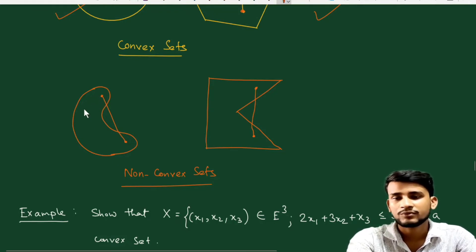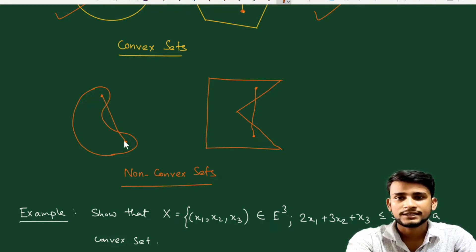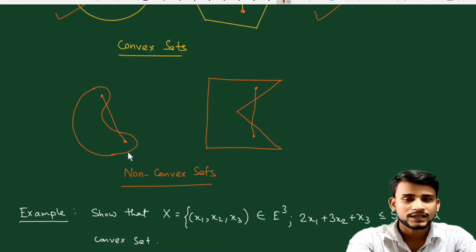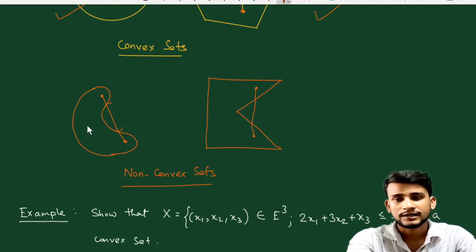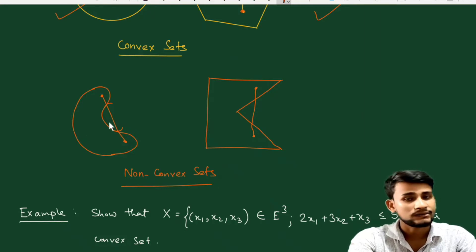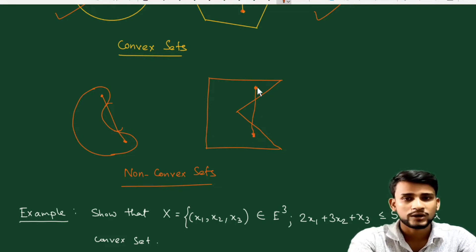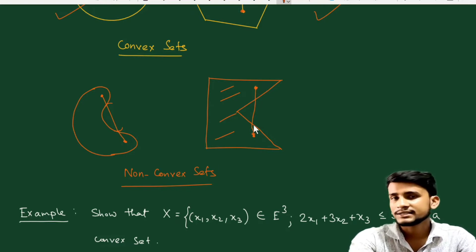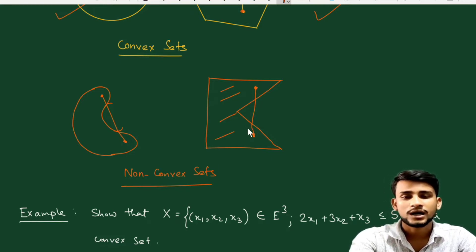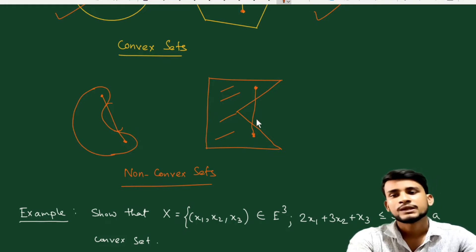Now, which figures are NOT convex sets? If we take a concave or non-convex shape and pick two specific points, joining them by a straight line goes outside the region. Similarly, for another such shape, some portions of the line segment joining two points lie outside the region. So these are not convex sets. This is very easy to see with diagrams.